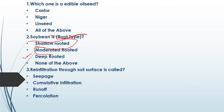The third question is: re-infiltration through the soil surface is called what? The first option is seepage, second is cumulative infiltration, third is runoff, and the fourth option is percolation — which is the absolutely correct answer. Percolation refers to re-infiltration through the soil surface.